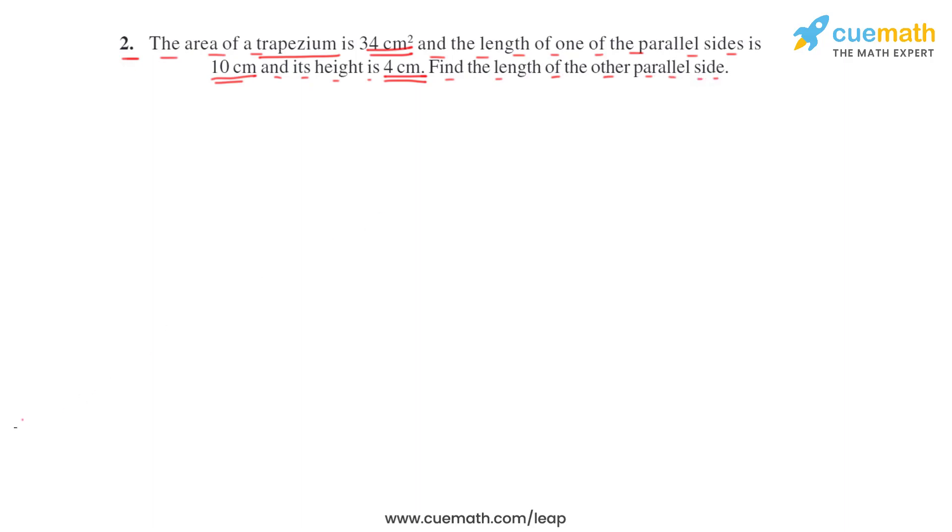So let's try to make a figure and then explain the question. They have given that there is a trapezium with area 34 square centimeters, one of the parallel sides is 10 centimeters, and the height is 4 centimeters. We have to find the other parallel side.